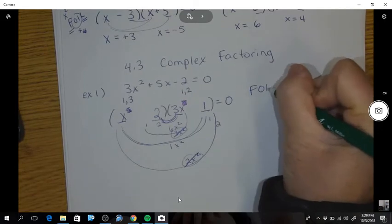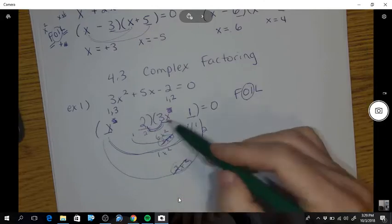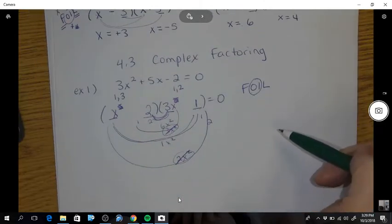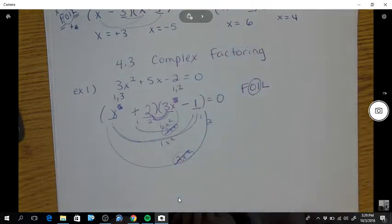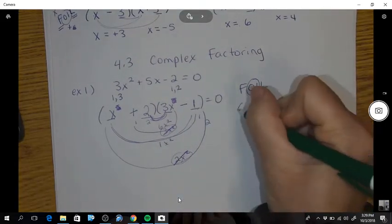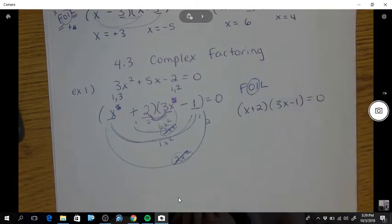And here is my 1x. So in the foiling system, my outsides make 1x and my insides make 6x. So positive 6x minus 1x. Okay? I'm going to write this out because now it looks very messy.